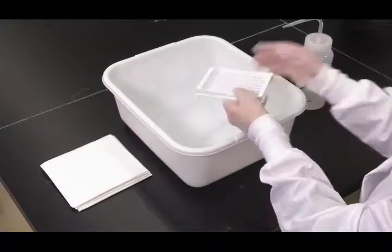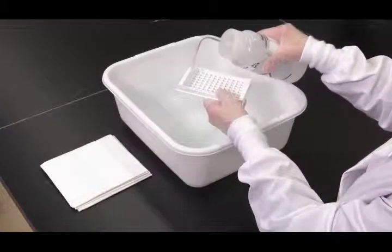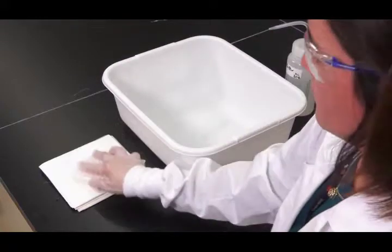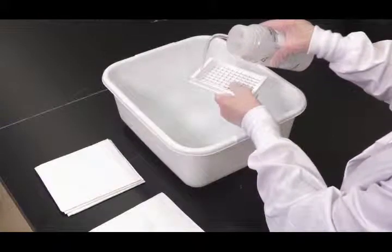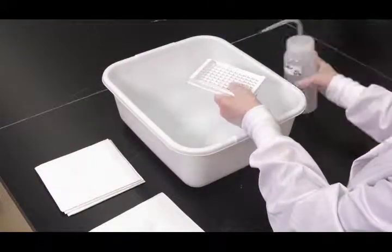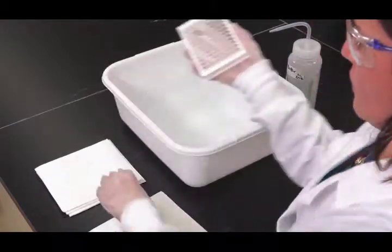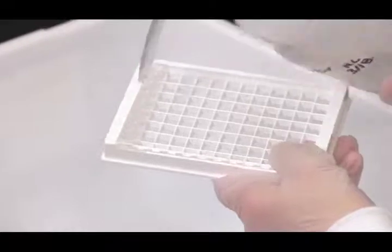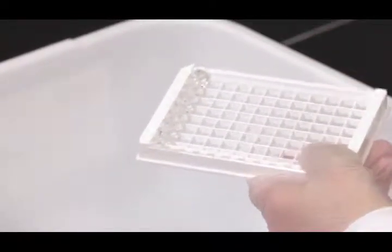After incubation, aspirate the contents of the 3M ELISA wells. Fill each well completely with 3M wash solution and aspirate. If the wash is done manually, invert the plate and pour or shake out the contents into a waste container, and strike the wells sharply on absorbent paper to remove residual wash solution. Repeat this step 4 times for a total of 4 washes.